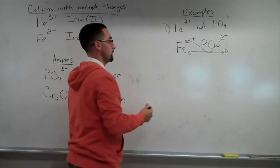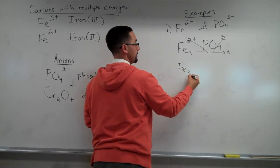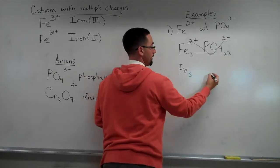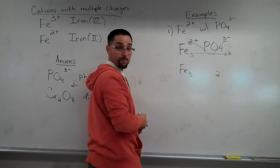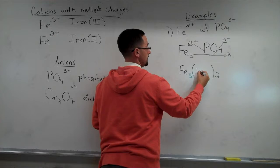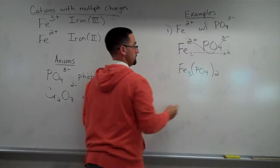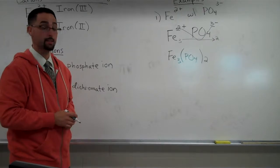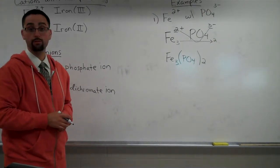So if we write this over, we have Fe 3, three iron atoms, and we have two phosphates, and we have to indicate that in parentheses. So the formula for this compound would be Fe 3, parentheses, PO4 2.